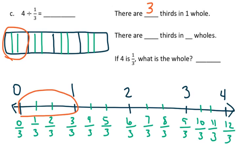So if there are 3 thirds in one whole, how many are there going to be in 4 wholes? Well, the answer is there are 12 thirds in 4 wholes. So if 4 is 1/3, what is the whole? The whole would be 12.